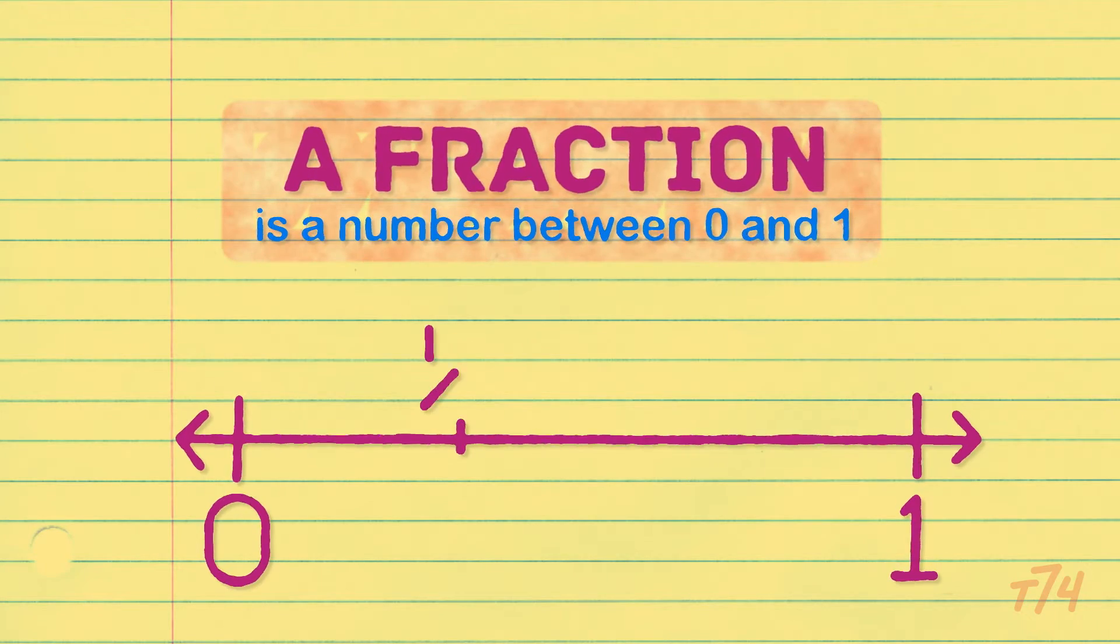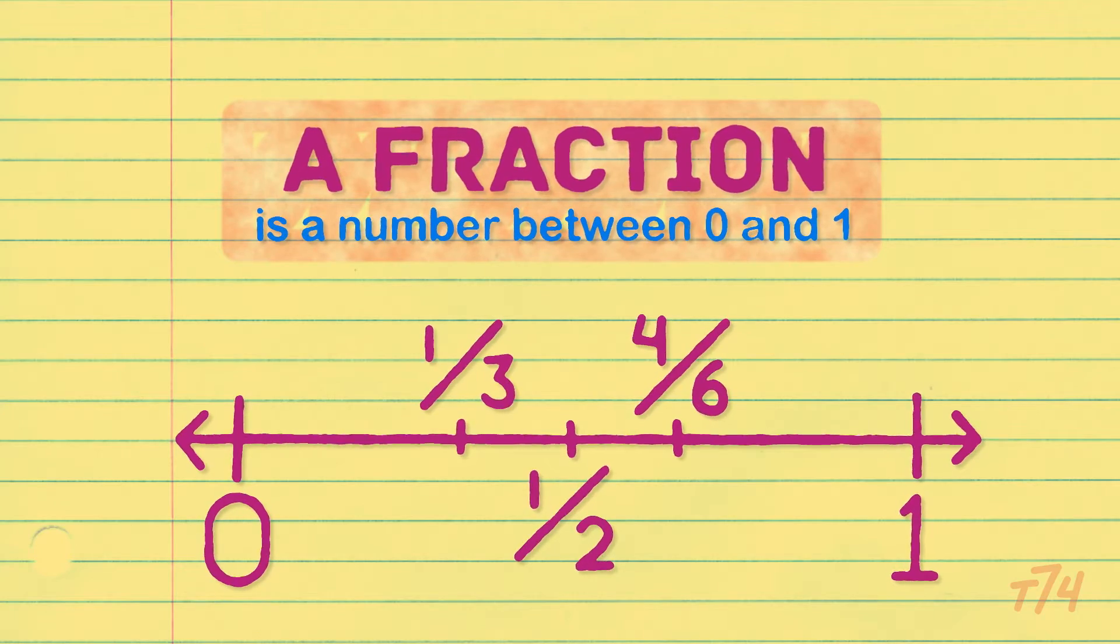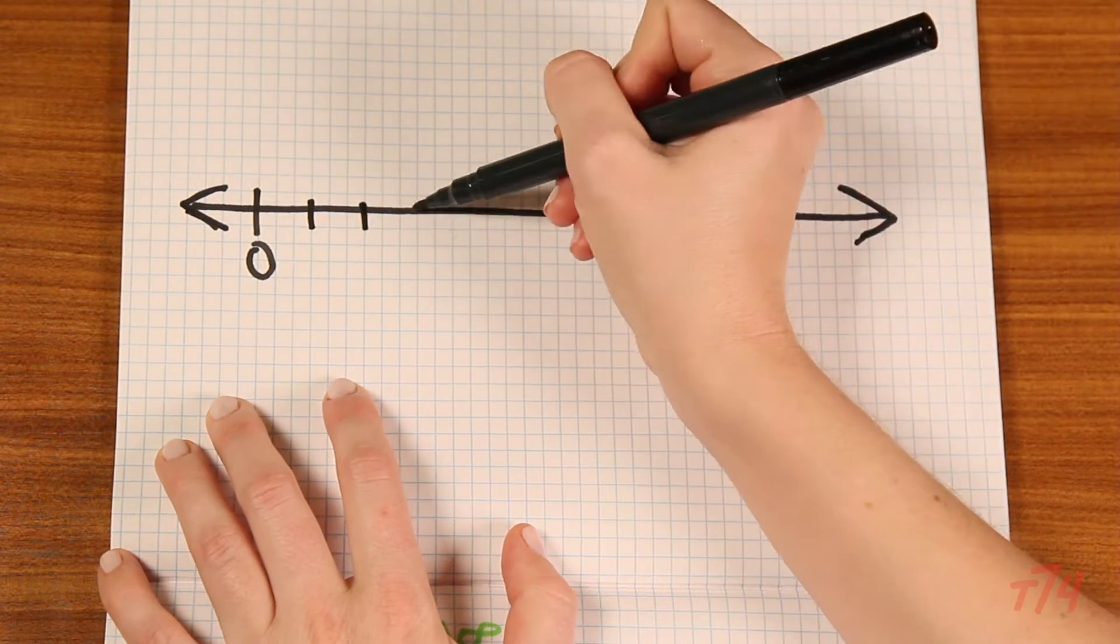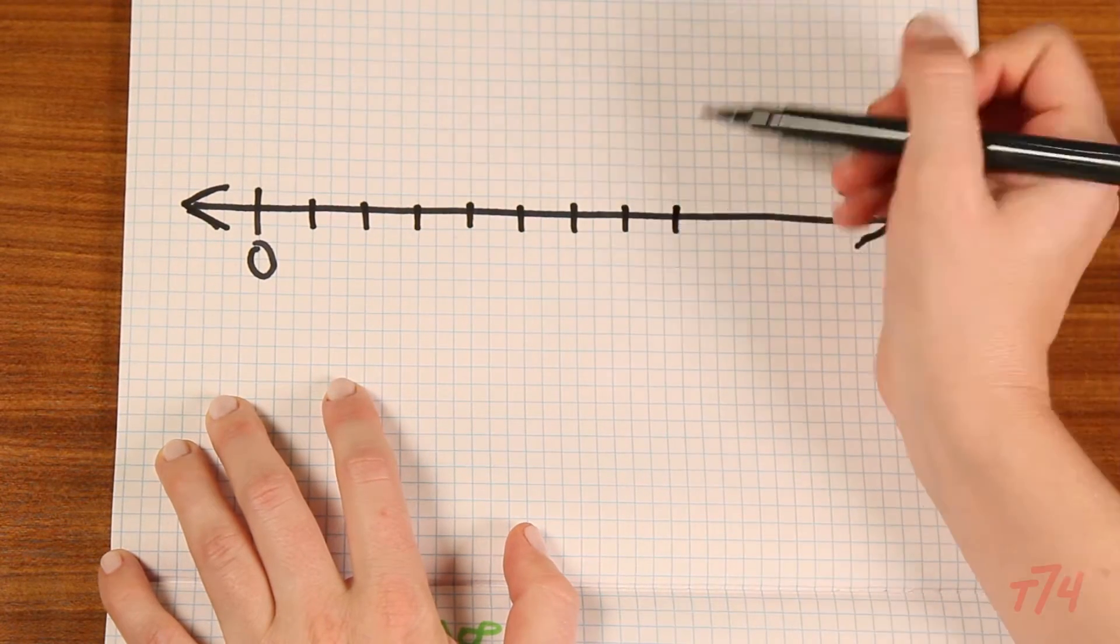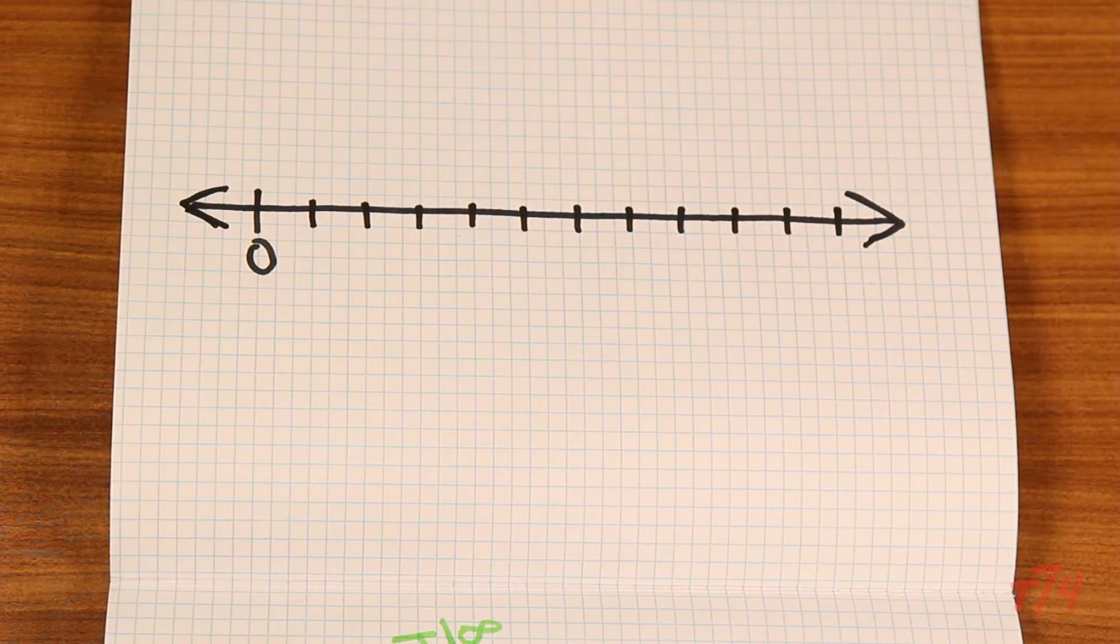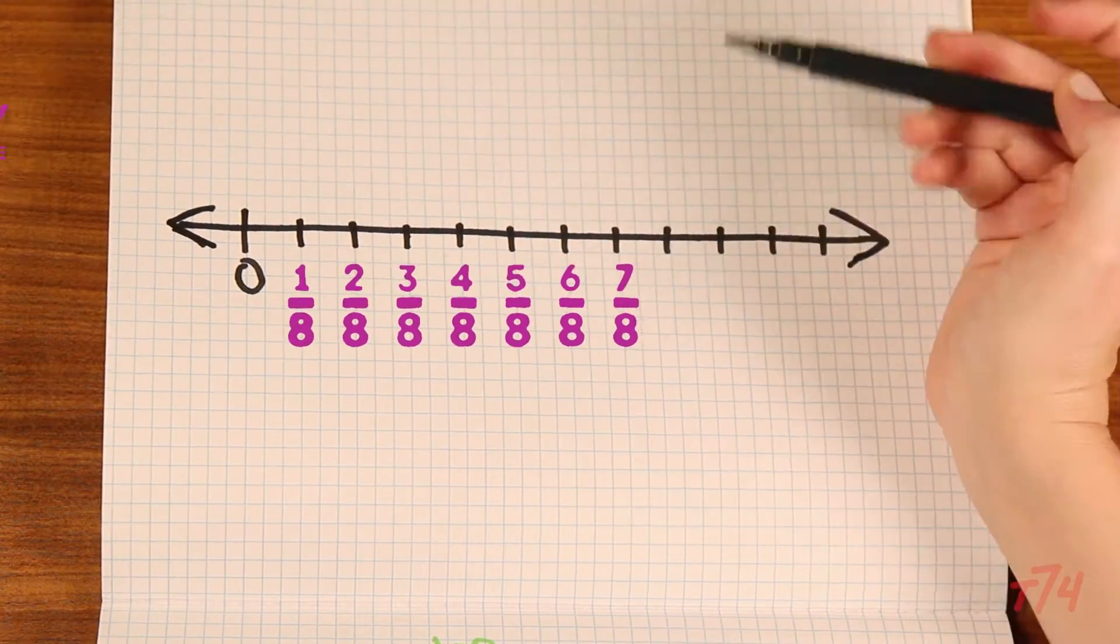So a fraction is a number between 0 and 1 in this instance. So when we understand the whole, we want to know that if I look at this number line, I have eight equal parts.